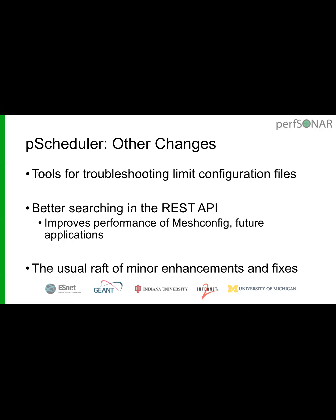As usual there's a raft of smaller improvements in 4.0.2: new tools for troubleshooting limit configuration files without having to put them into the system and restart; additional ways to search for tasks in the REST API (driven by improving mesh config performance); and the usual collection of minor enhancements and bug fixes, all detailed in the release notes.